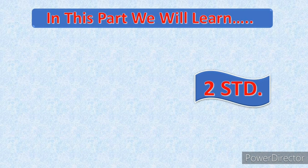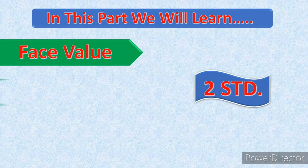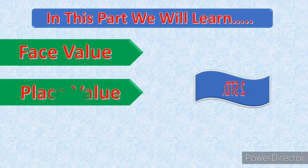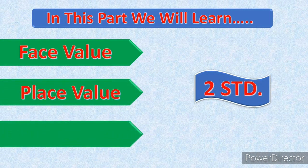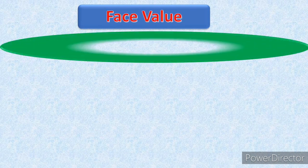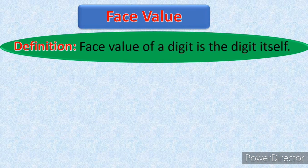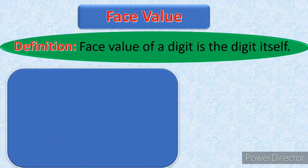In this part, we will learn about face value, place value and exercise. This part is related to second standard. First, we will learn face value. Here is the definition of face value. Face value of a digit is the digit itself. We will see through example.